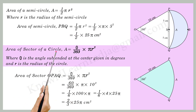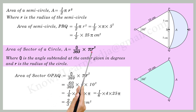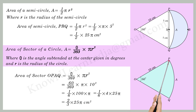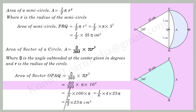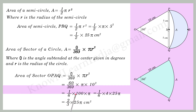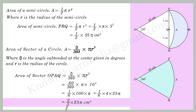The area of a sector of a circle A is equal to theta by 360 into pi r squared, where theta is the angle subtended at the centre in degrees and r is the radius of the circle. So the area of sector Opaq is equal to 60 by 360 into pi into 10 squared, which equals 1 by 6 into 100 pi, which equals 2 by 3 into 25 pi cm².